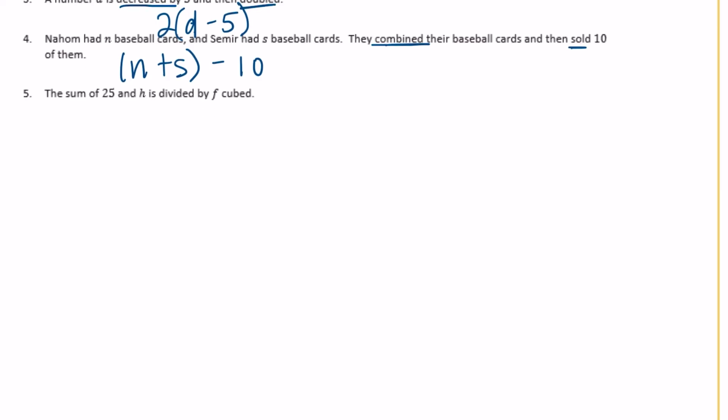Number 5. The sum of 25 and H, so sum means we're adding. So sum of 25 plus H is divided by F cubed. So divided by F cubed. Or you could write it as 25 plus H over F cubed. These are both the same thing.